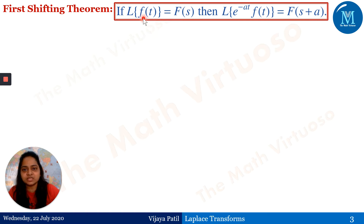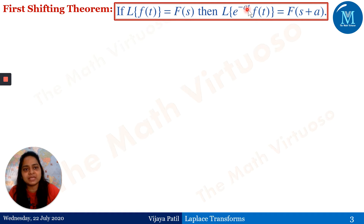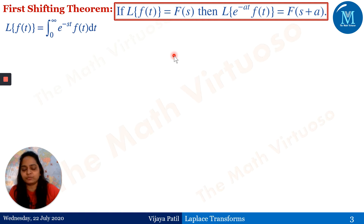If you observe here, this is f(t). This f(t) has become e^(-at) into f(t). What is the effect of this on F(s)? That has become F(s+a). So if I have e^(-at) multiplied by f(t), the effect is that s gets combined with plus a. So if I have e^(-at), it becomes F(s+a).